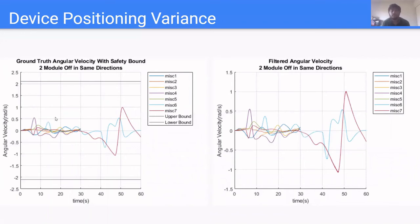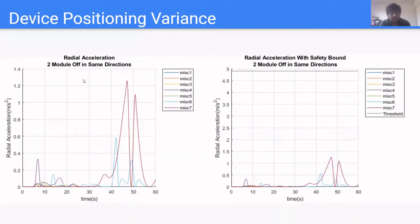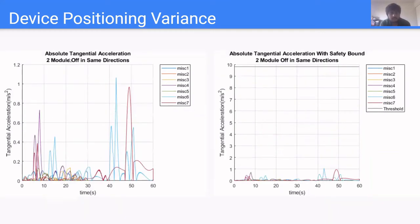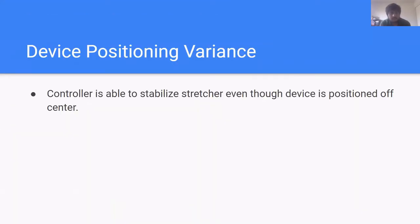Here is the result of device positioning variance with two modules offset in the same direction on miscellaneous disturbance with average body. As you can see, the root 2 angular velocity is under safety value. The radial acceleration is also under safety value. Same as absolute tangential acceleration. According to our result from simulation, the controller also met the requirement for the other two cases of device positioning range. So we can conclude that the controller is able to stabilize the stretcher, even though the device's position is off-center.